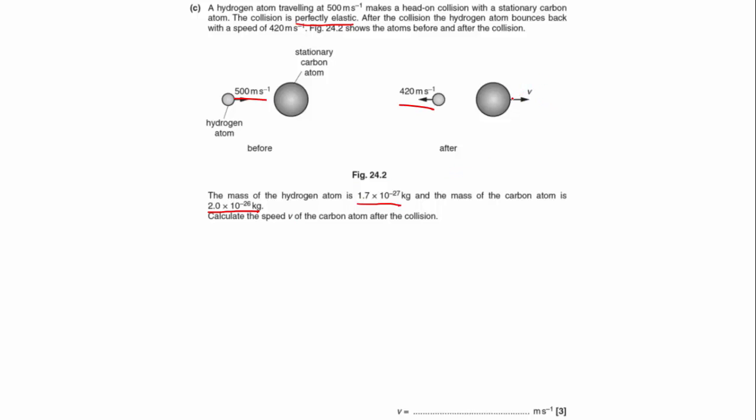What we need to know is that momentum is always conserved. I like to do these collision problems as before and after. Before, the stationary carbon atom has no momentum, so we've got the momentum of the hydrogen atom. Momentum is mass times velocity, so we've got 500 multiplied by 1.7 times 10 to the minus 27.